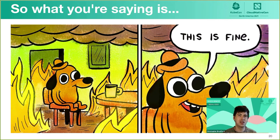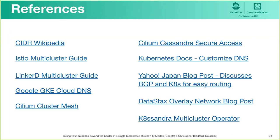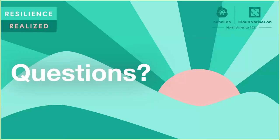Planning up front will pay out huge down the road. After you've launched a cluster you can't just change the CIDR space your pods are running in — you'd have to migrate. We've also built on some amazing projects covered today, and we included a bunch of references whether you're rolling your own solution or relying on technologies like Cilium, Istio, Linkerd, or managed services like Google Cloud DNS. Check out the slides, and with that, are there any questions?